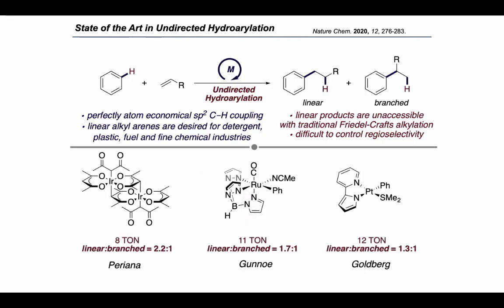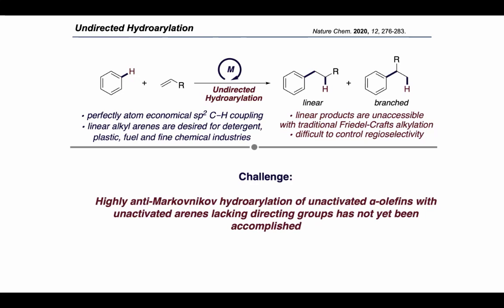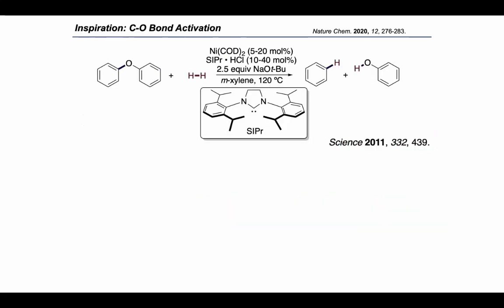Shown at the bottom of this slide is the state-of-the-art catalyst for the hydroarylation of simple arenes such as benzene with simple alkenes. In all cases, the turnover numbers for these transformations are quite low because the substrates are both unactivated and there's not a strong preference for the linear regioisomer over the branched product. The real research goal is to achieve the undirected hydroarylation of unactivated substrates without any directing groups. The inspiration for our catalytic system came from previous work done back in 2011 on the hydrogenolysis reaction of C–O bonds in diaryl ethers.